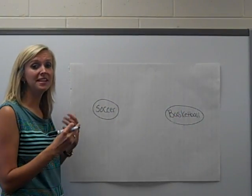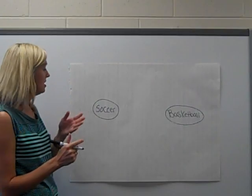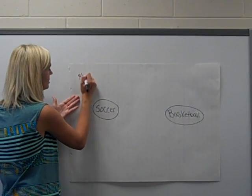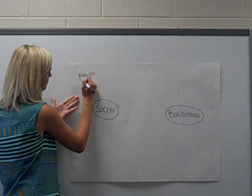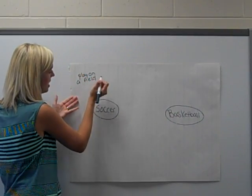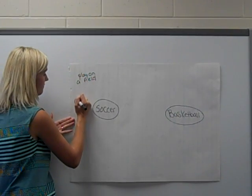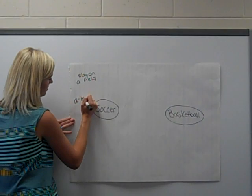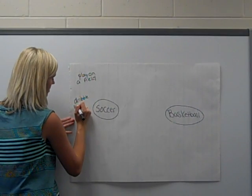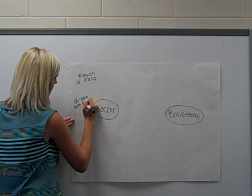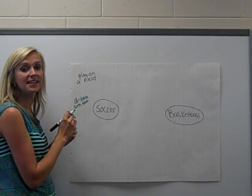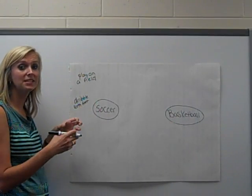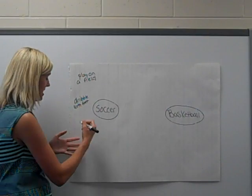Now let's think of some things that are different about soccer and basketball. In soccer you play on a field. In soccer you dribble with your feet. In soccer you use a black and white small ball that you can't touch with your hands.